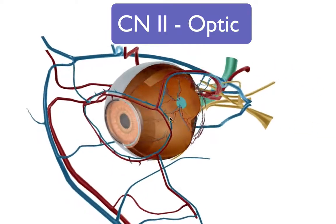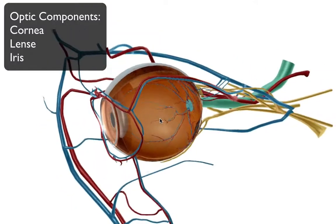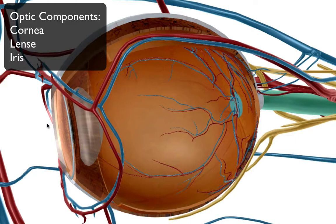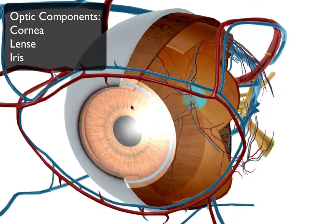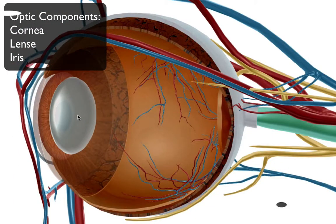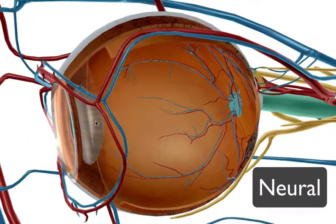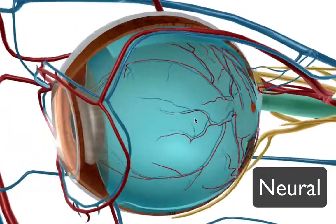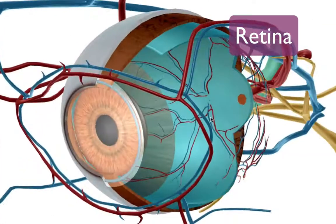Continuing to cranial nerve number two, the optic nerve. The eyeball has two main components: the mechanical optical component and the neural component. The mechanical side includes the cornea — a transparent layer that focuses light — the iris, which controls the amount of light entering (more melanin gives a brown iris, less gives blue) — and the lens, which also helps focus light.